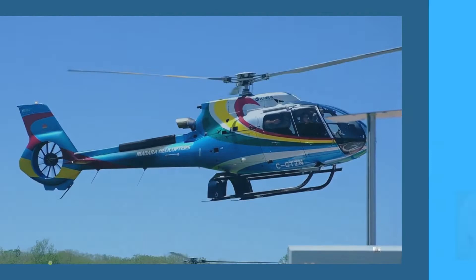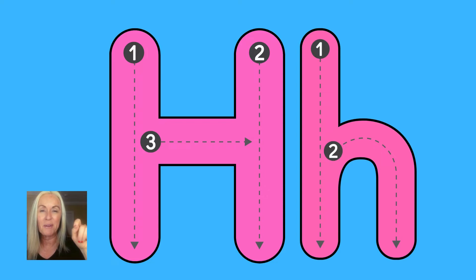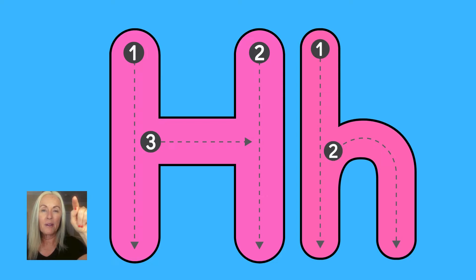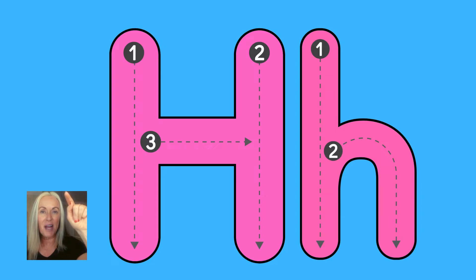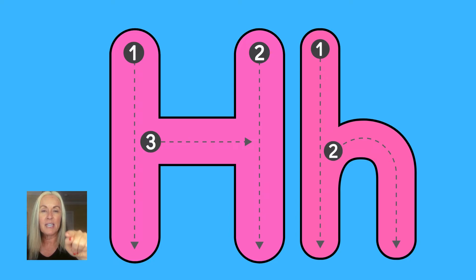Now let's practice writing the uppercase and lowercase letter H. Start at the top, pull down, jump up, pull down, jump to the middle and slide. That's uppercase H. Let's do that two more times while saying the sound for H. One more time — start at the top, pull down, jump up, pull down, jump to the middle and slide. Now let's do the lowercase H. Once again you start at the top, pull down, push up, pump around. Two more times — start at the top, pull down, push up, pump around. One more time, lowercase H: start at the top, pull down, push up, pump around.